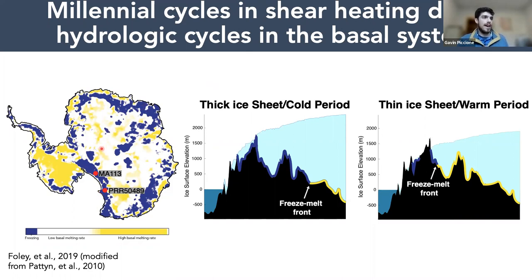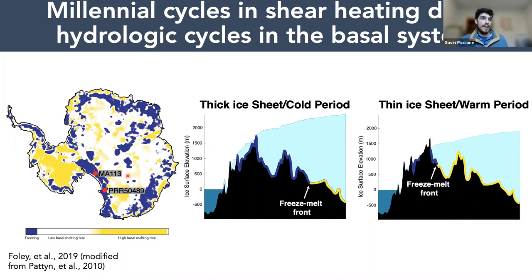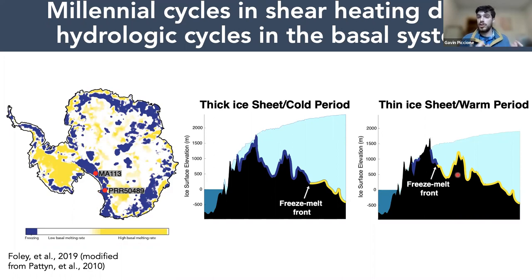Going back to the Foley and others map, our two samples come from very close to the boundary between freezing and melting expected in the subglacial environment. During cold periods, the ice sheet is thicker and the freeze-melt front is further inboard from where our samples are forming. As you thin the ice sheet during a warm period, that freeze-melt front migrates toward the edge of the ice sheet. We see this by flushing in those oxidized glacial meltwaters, driving calcite precipitation. During millennial-scale warm periods, you are enhancing subglacial hydrologic connectivity.